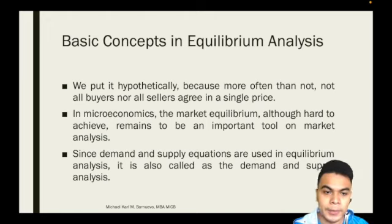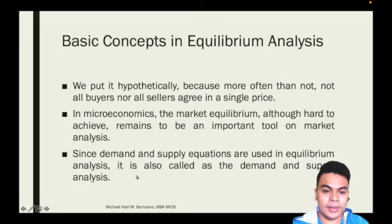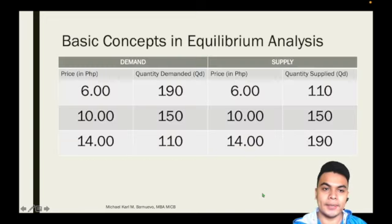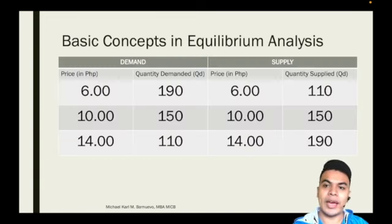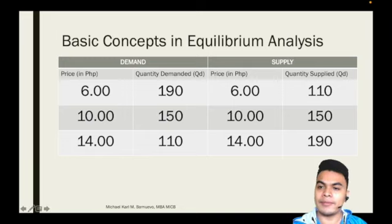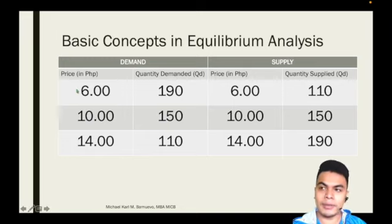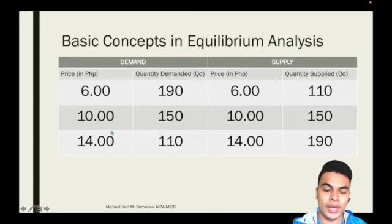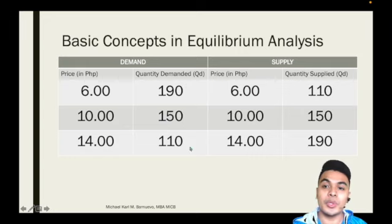That is what we will be computing for today. Another term for equilibrium analysis is demand and supply analysis. So let's say we have an example here — we have data for demand and data for supply. For demand, the law of demand still applies: as the price goes higher, the quantity demanded goes lower. And for the law of supply, if the price will go up, the quantity supplied will also go up.